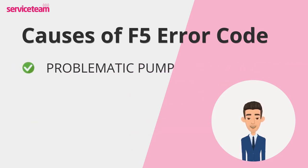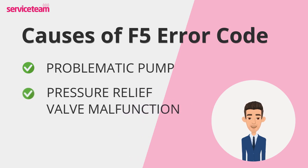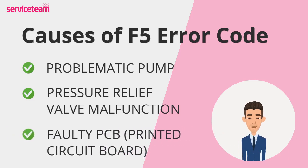The pump is what keeps water moving through your system. If it's faulty or inefficient, circulation suffers and the F5 fault appears. The pressure relief valve helps maintain the right pressure in your boiler. If it's faulty, your system could lose pressure and trigger the fault code. Finally, there's the faulty PCB — it's like the boiler's brain. If it's having issues, it can throw off the whole system and cause errors like F5.